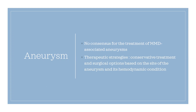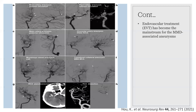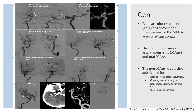Aneurysms have a high prevalence in MMD patients — around 20% or more. There is no consensus on how to treat them, though endovascular treatment (EVT) is the mainstream approach for aneurysms in MMD patients. Classification is complex: they are divided into major arterial aneurysms and non-major arterial aneurysms, with subclassification into distal collateral arterial aneurysms, Moya-Moya vessel aneurysms, transdural cerebral aneurysms, and anastomotic aneurysms — helping guide endovascular treatment decisions.